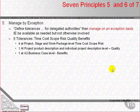PRINCE2 divides management control into four or five levels of authority. At the top is corporate or program management, who delegate project tolerances to the project board. Next, the project board directs the project and delegates stage tolerances to the project manager. Third, the project manager managing a stage delegates work package tolerance to the team members or team managers delivering a work package's product-based results.